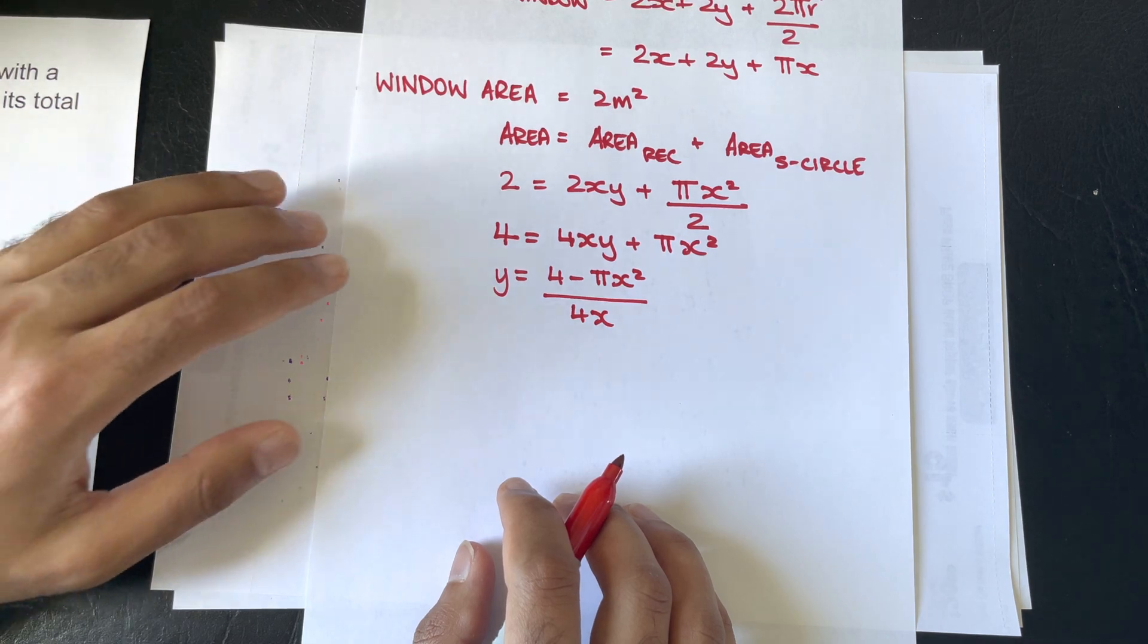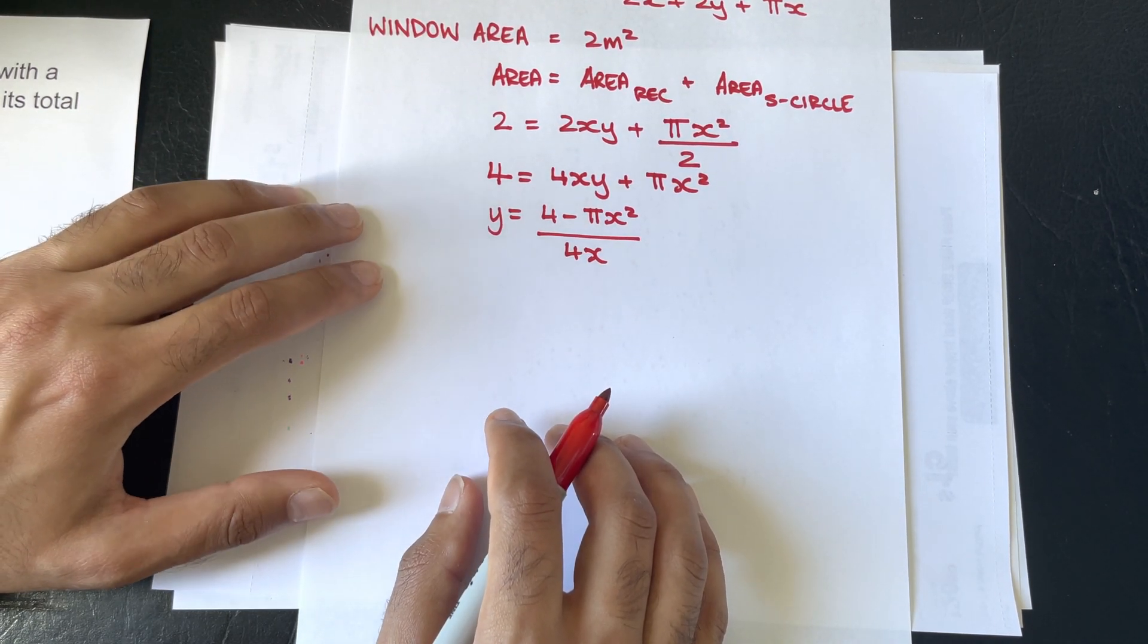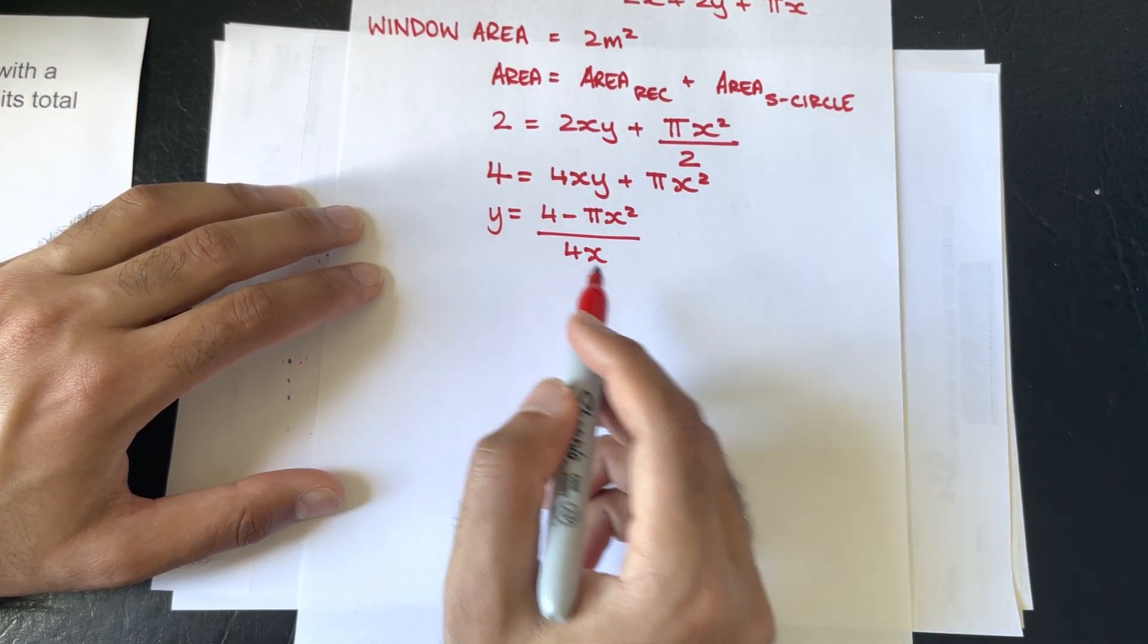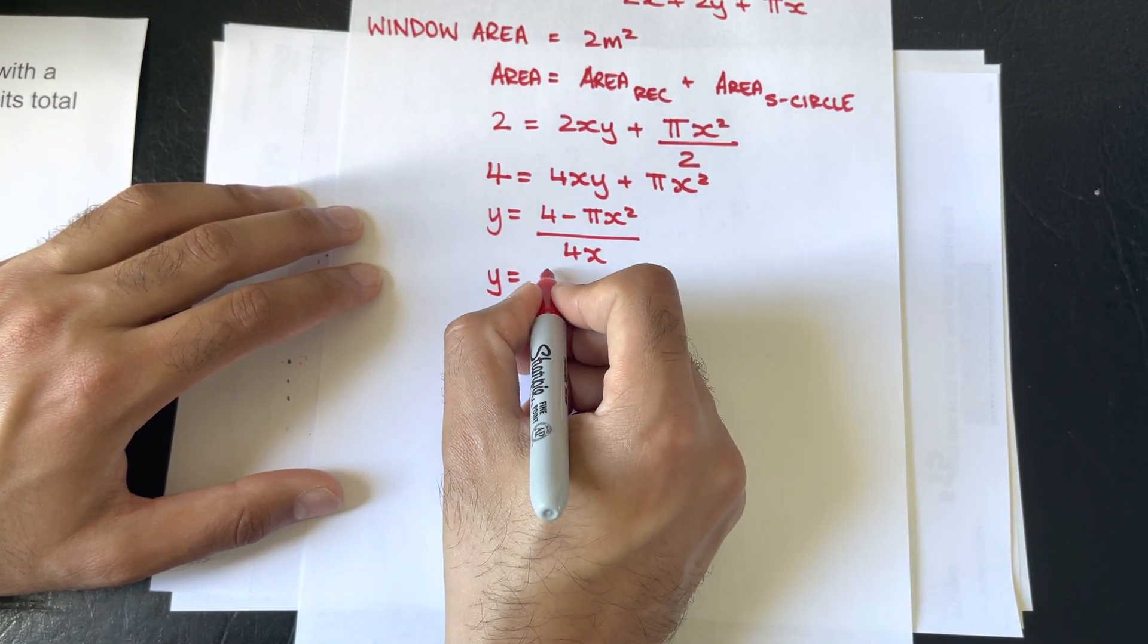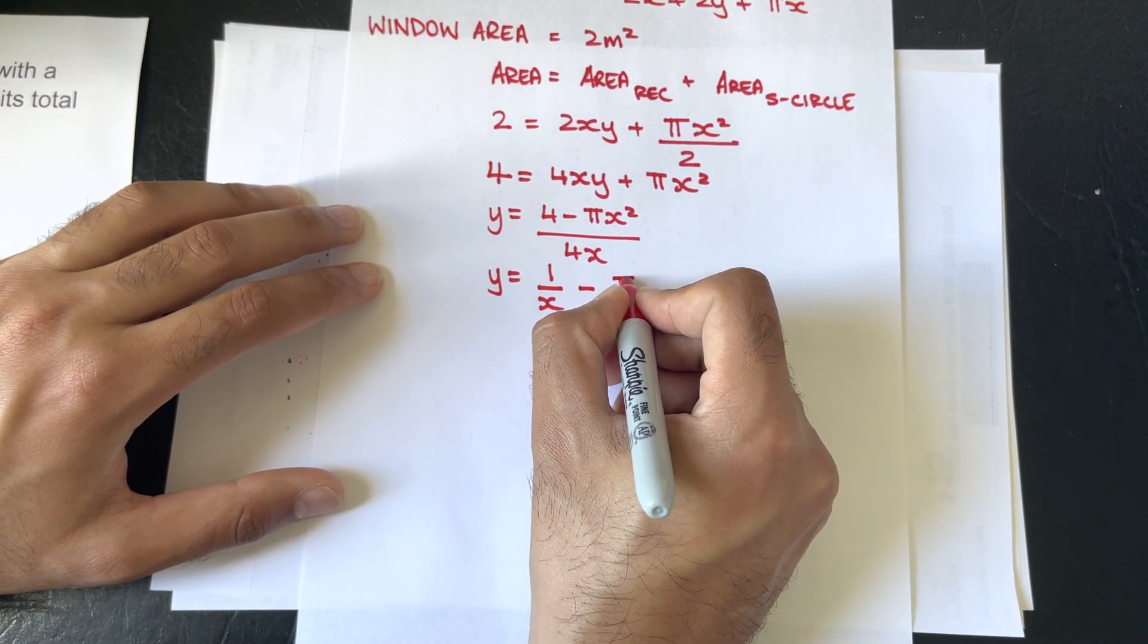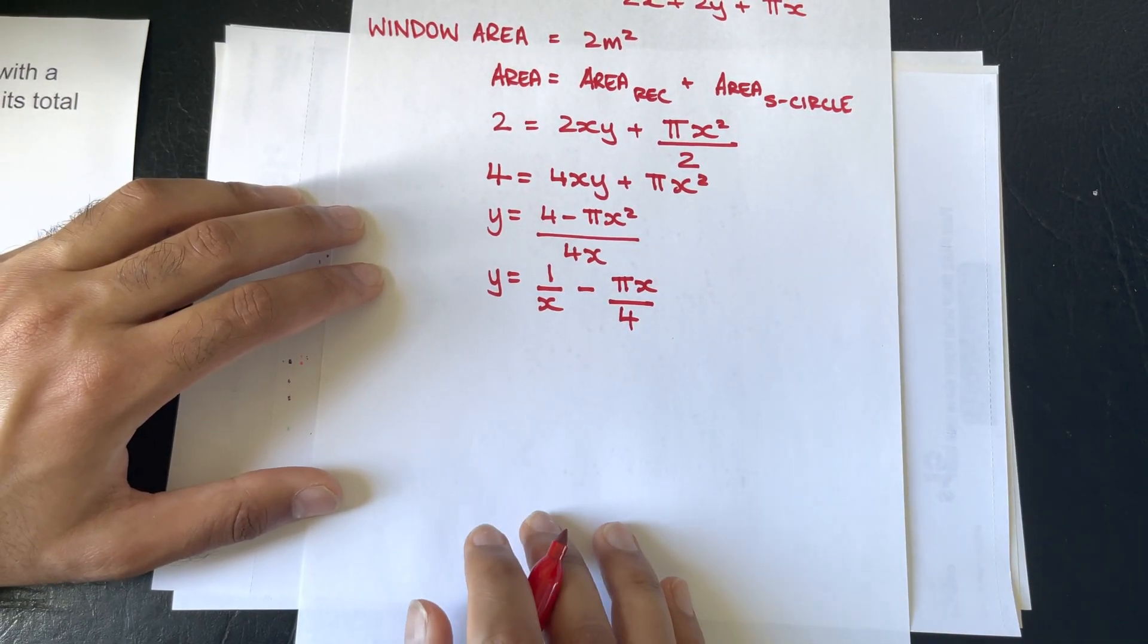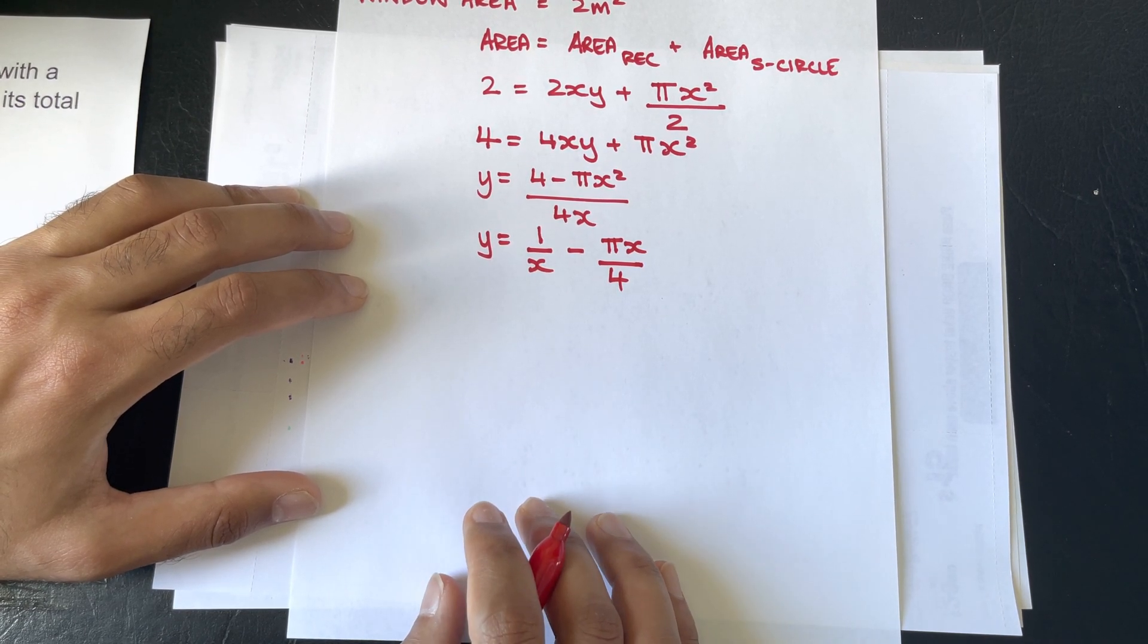Now, that's as far as you can go, but for the sake of the derivative, instead of using the quotient rule, I'm going to break the fraction up. So, I'm going to have it so it's 1 over x minus πx over 4.